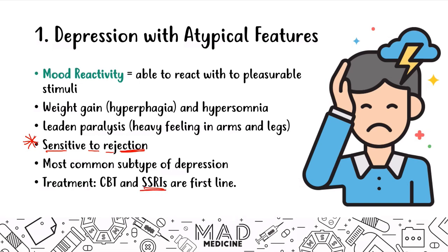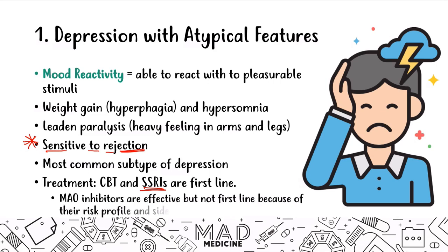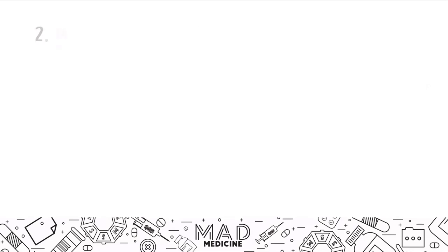To treat this, you're going to use cognitive behavioral therapy and SSRIs. MAOIs or monoamine oxidase inhibitors are effective, but they're not first-line because of their risk and side effect profile. So you want to treat with CBT and SSRIs — like fluoxetine, paroxetine, and sertraline. These are the first-line treatments for the additional depressive disorders as well.